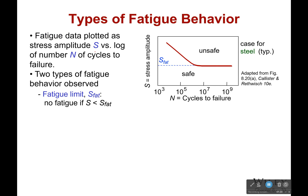Here is some fatigue data plotted as the stress amplitude versus the number of cycles. Stress amplitude simply means from where you normally are, it increases and goes back down, increases and goes back down — it's that increase in change.